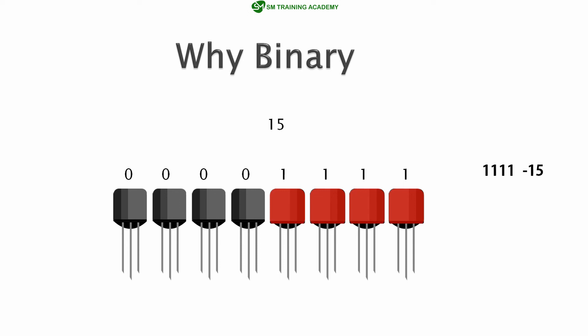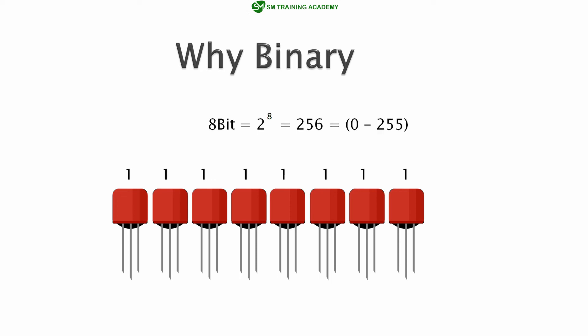If we turn on all 8 transistors that represents the number 255 in decimal. An 8-bit computer can store at most 256 decimal values — from 0 to 255 — which is 2 to the power 8. So the simplest 8-bit computer can store numbers from 0 to 255 at a time in a single memory space using only 8 bits.